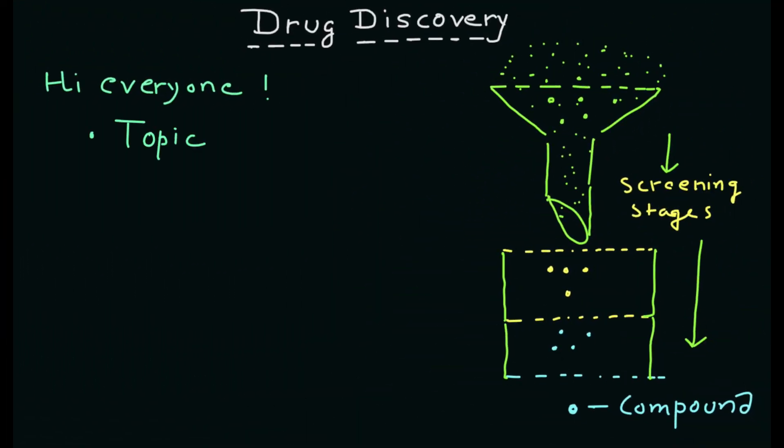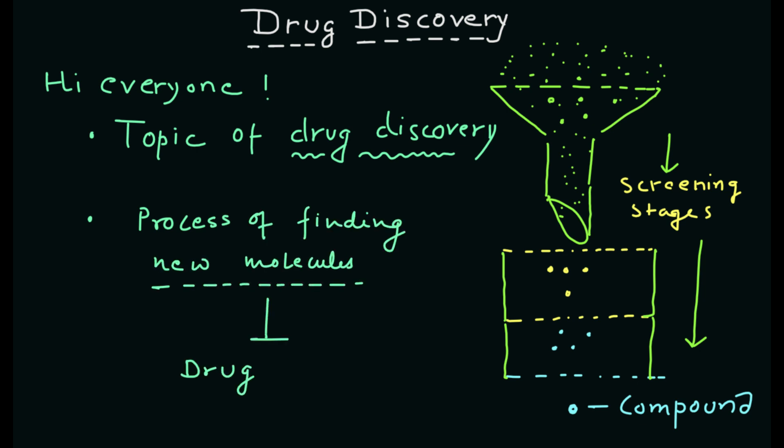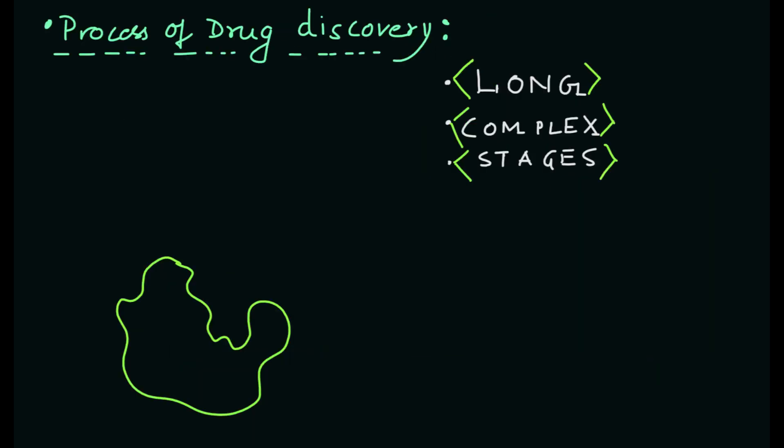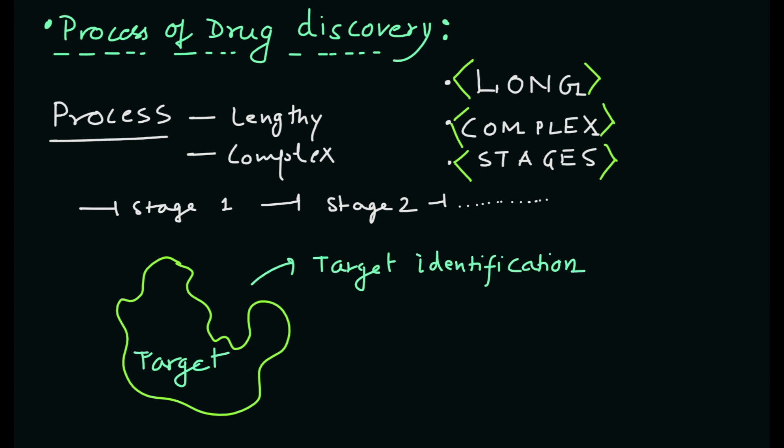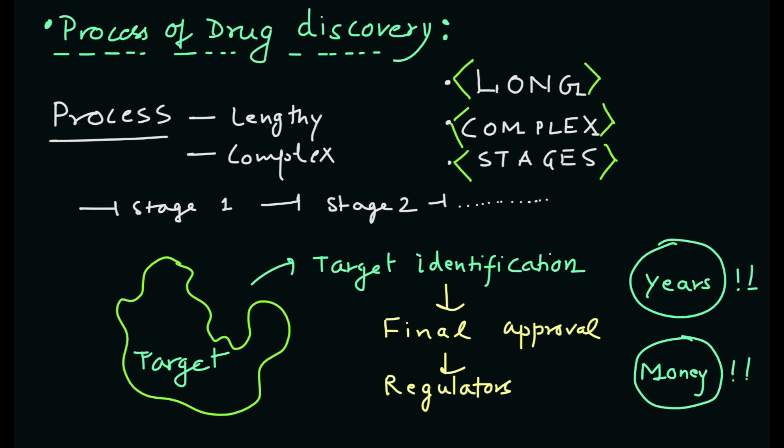Hi everyone, today I would like to explain the topic of drug discovery. In this video, we will investigate the process of drug discovery in detail. The process of drug discovery is a lengthy and complex journey that involves several stages. It begins with the identification of a potential therapeutic target and ends with the final approval of a new drug by regulatory agencies. Typically, the drug discovery process takes over a decade and costs billions of dollars.